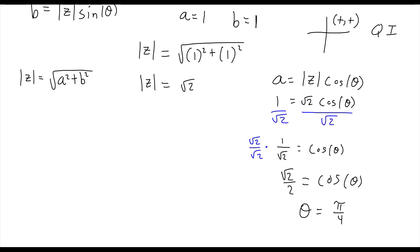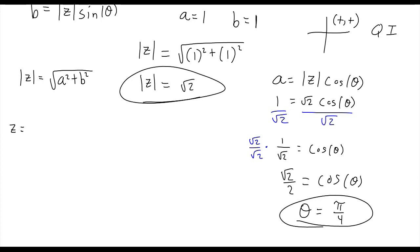We have our magnitude. We have theta. Now we're ready to write out the answer. Write out the number in trig notation. So z, the complex number 1 plus i, is equal to the magnitude, which is the square root of 2, times cosine of the angle pi over 4 plus i times sine pi over 4.